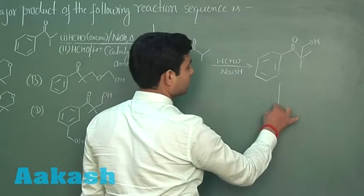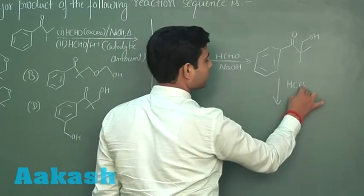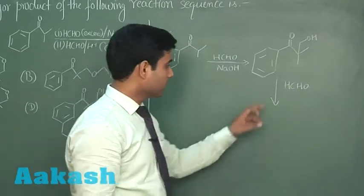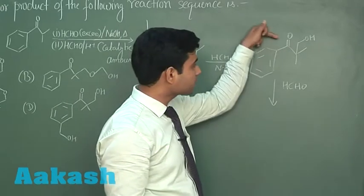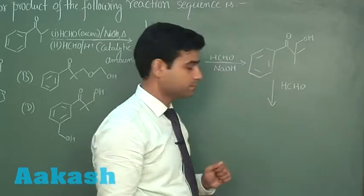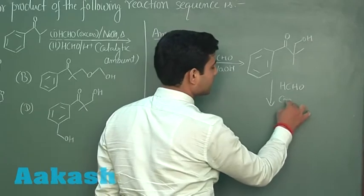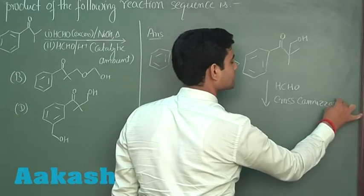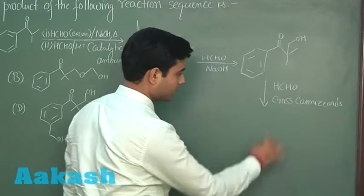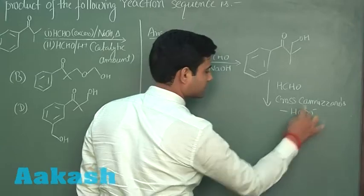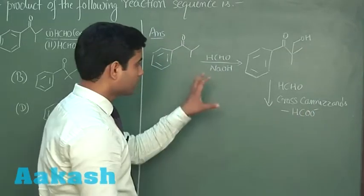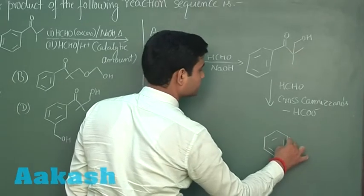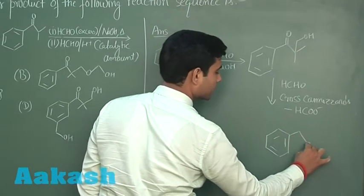In the same reaction, the another step will take place in which the cross Cannizzaro reaction will take place. Here, the oxidation of HCHO will take place and the reduction of this carbonyl carbon will take place. Cross Cannizzaro reaction will take place which results in the removal of HCOO-. The product formed will be this, this will be the product formed in this reaction.